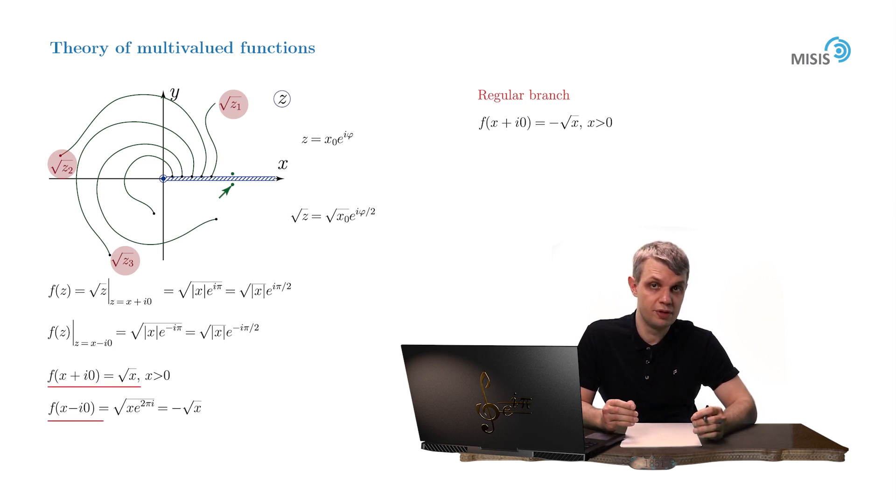You see that on the upper and lower bank of the branch cut, the value of the function undergoes a jump. Its value changes instantly from negative to positive one. That is another reason why we need a branch cut.